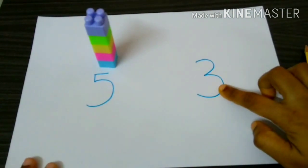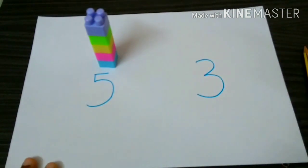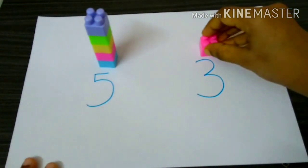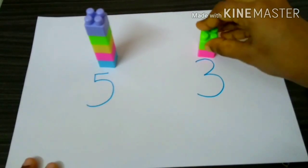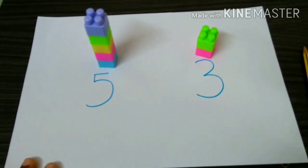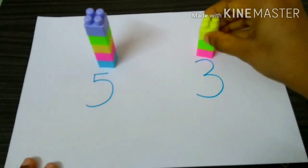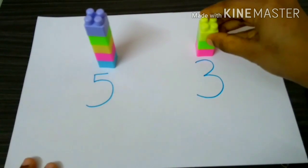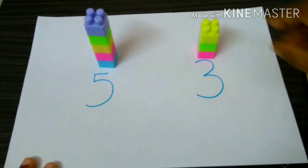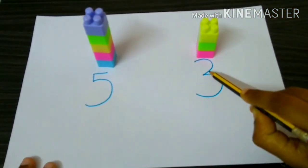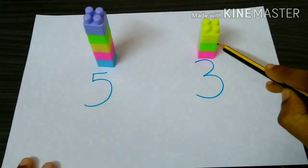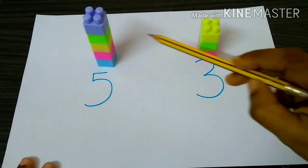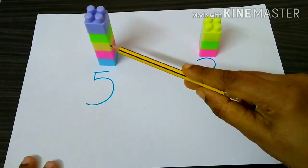Now we have to put 3 blocks on top of the other. 1, 2, 3. What do you think is taller? 5 blocks or 3 blocks? 5 blocks is taller.